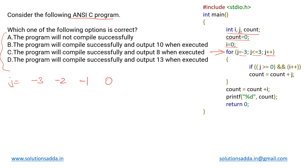This loop will execute for the values of j equal to minus three, minus two, minus one, zero, one, two, and three — so this for loop will be executing seven times. Inside that loop we encounter this if condition.